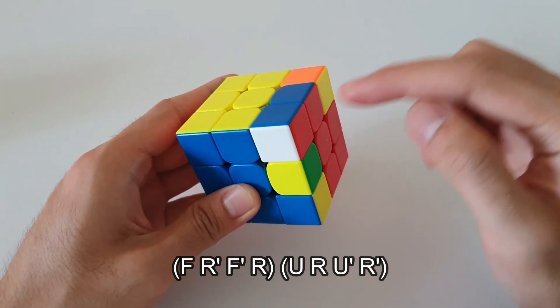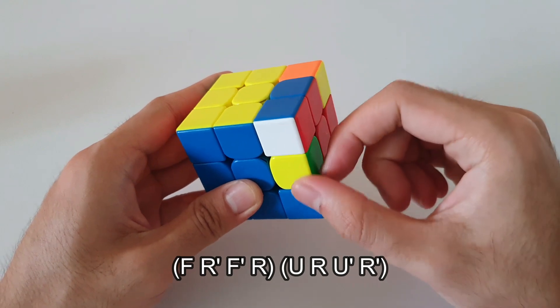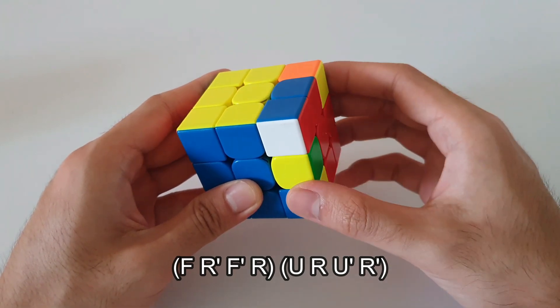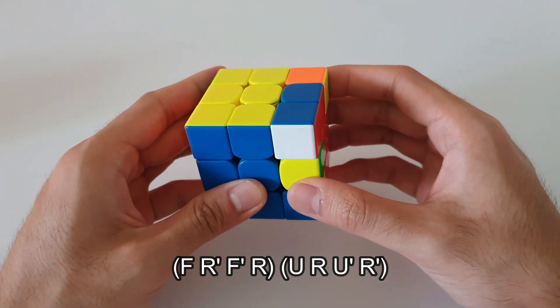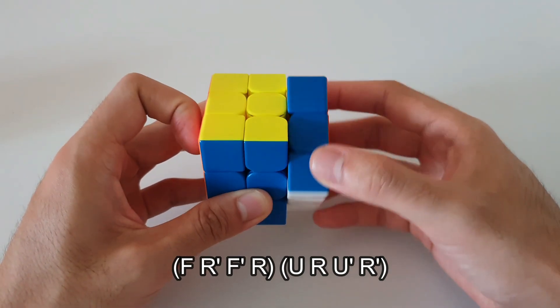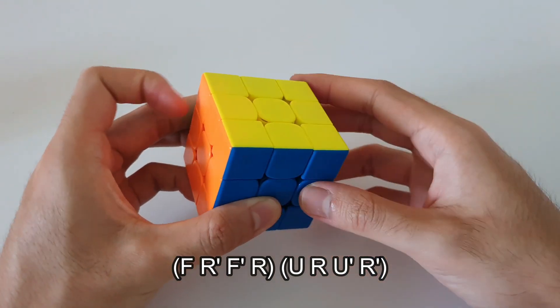Otherwise, you can just remember it as inserting this F2L pair into this slot as if it was just a regular F2L pair. So just like this. And that solves that OLL case.